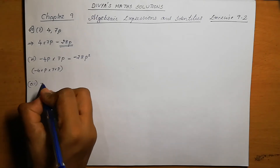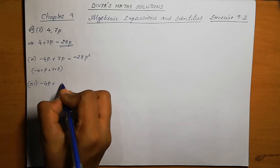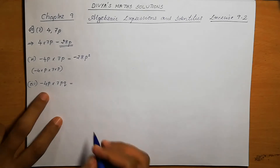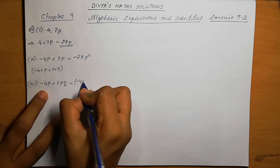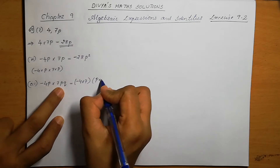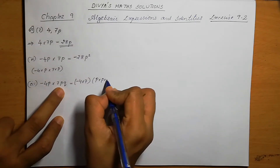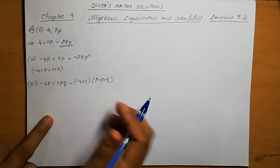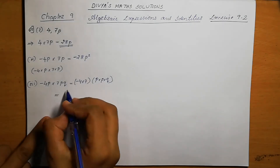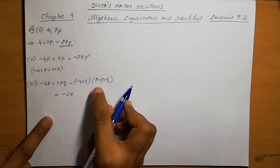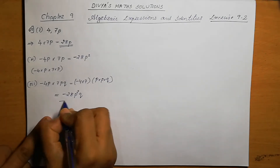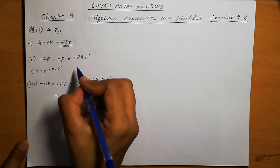Third one is minus 4p into 7pq. Writing the numbers together: minus 4 into 7, and the variables p into pq — that means p into p into q. This gives minus 28, and p into p is p square, so the answer is minus 28p square q.